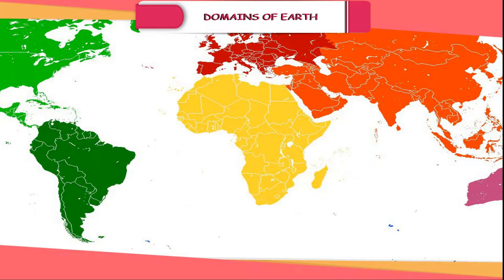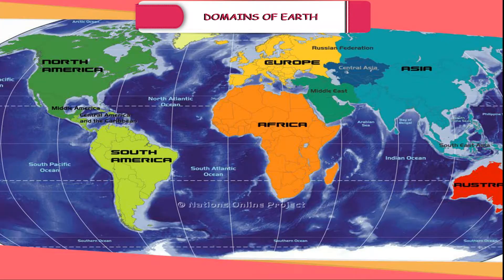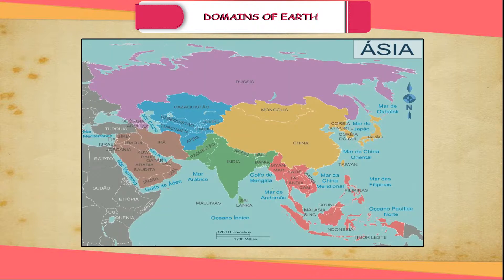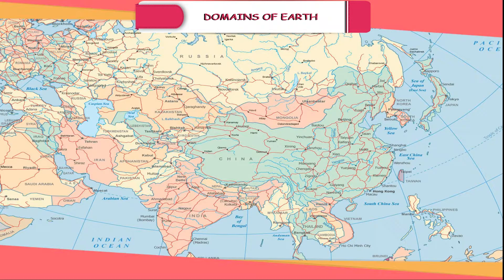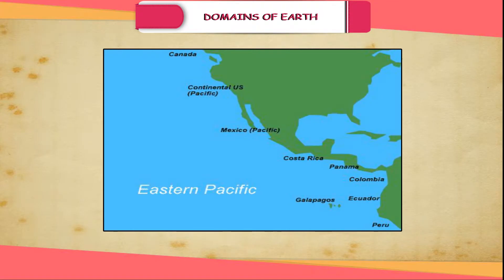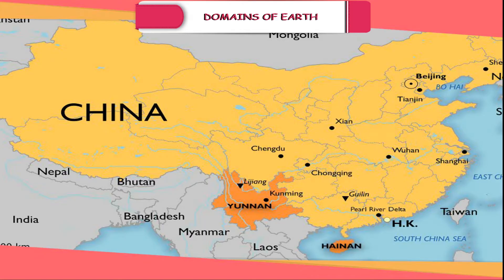Asia. This is the largest continent of the world. Asia covers an area greater than Europe and Africa put together. Sometimes Europe and Asia are together known as Eurasia. Asia is separated from Europe by the Ural Mountains and the Caspian Sea on the west. This continent covers about one-third of the total land area of the world and lies in the Eastern Hemisphere. The Tropic of Cancer passes through this continent. The continent is also bounded by oceans on three sides: the Arctic Ocean to the north, the Indian Ocean to the south and the Pacific Ocean to the east. It has two most populous countries of the world, namely China and India.